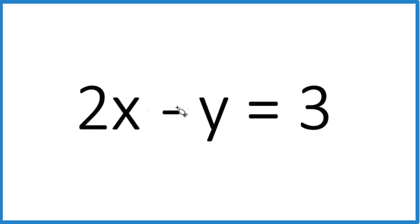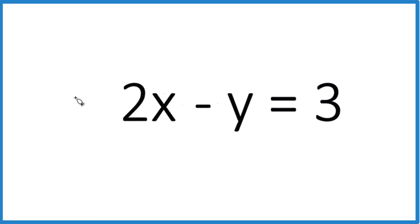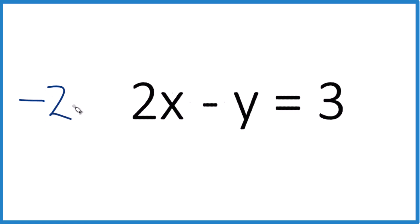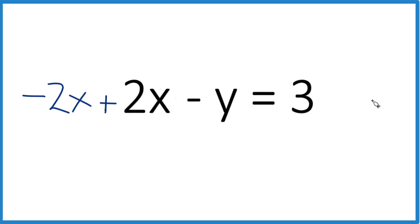To get y by itself, let's first see if we can get rid of the 2x here. I could subtract 2x—negative 2x plus 2x would give me 0. But remember, this is algebra. I have to do it to this side as well. So I'm going to subtract 2x over here.